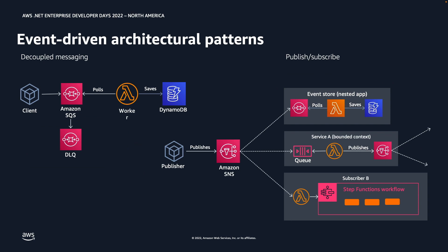There are numerous patterns demonstrating the combined use of SQS and SNS. Two examples: on the left, a client sends a message to Amazon SQS, a dead letter queue handles errors, and a Lambda function polls SQS and writes records to DynamoDB. On the right, a publisher pushes to Amazon SNS enabling a fan-out architecture — a single message goes to an SQS queue where Lambda writes to a database, to a second SQS queue where Lambda writes to another SNS topic, and to a step function where SNS triggers a Lambda function that drives a further workflow.